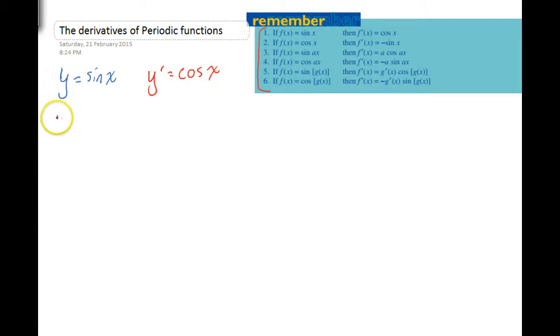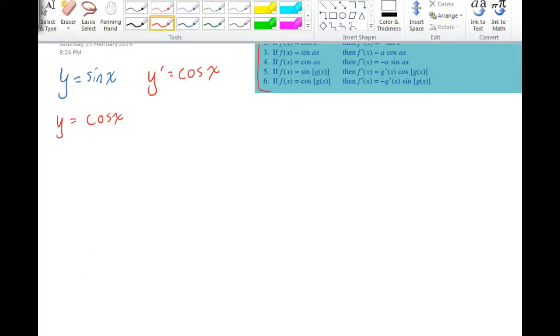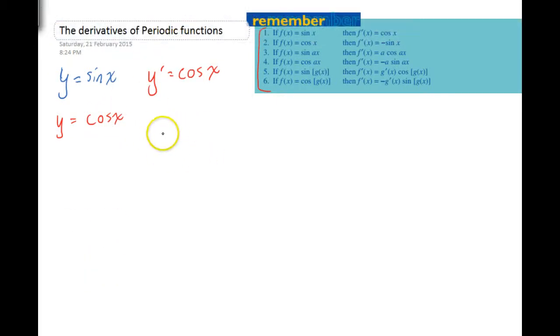Our next one here. If y equals cos x, just change colors here real quick. If y equals cos x, y dash equals negative sine x. That's pretty straightforward so far. Let's try another one.